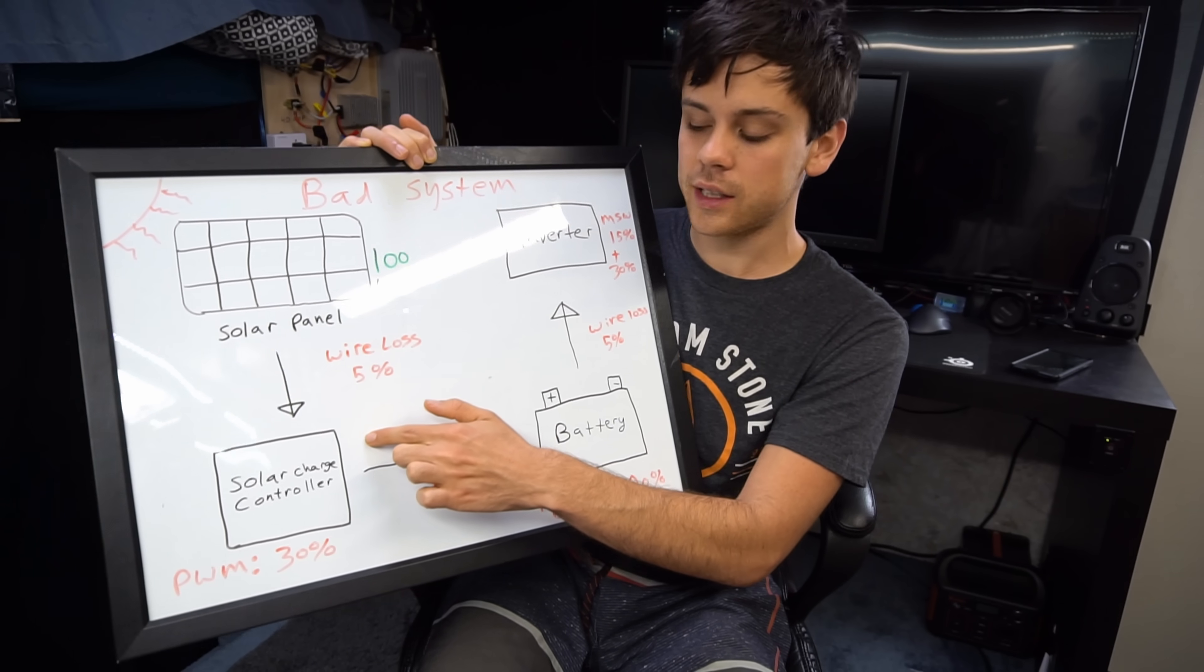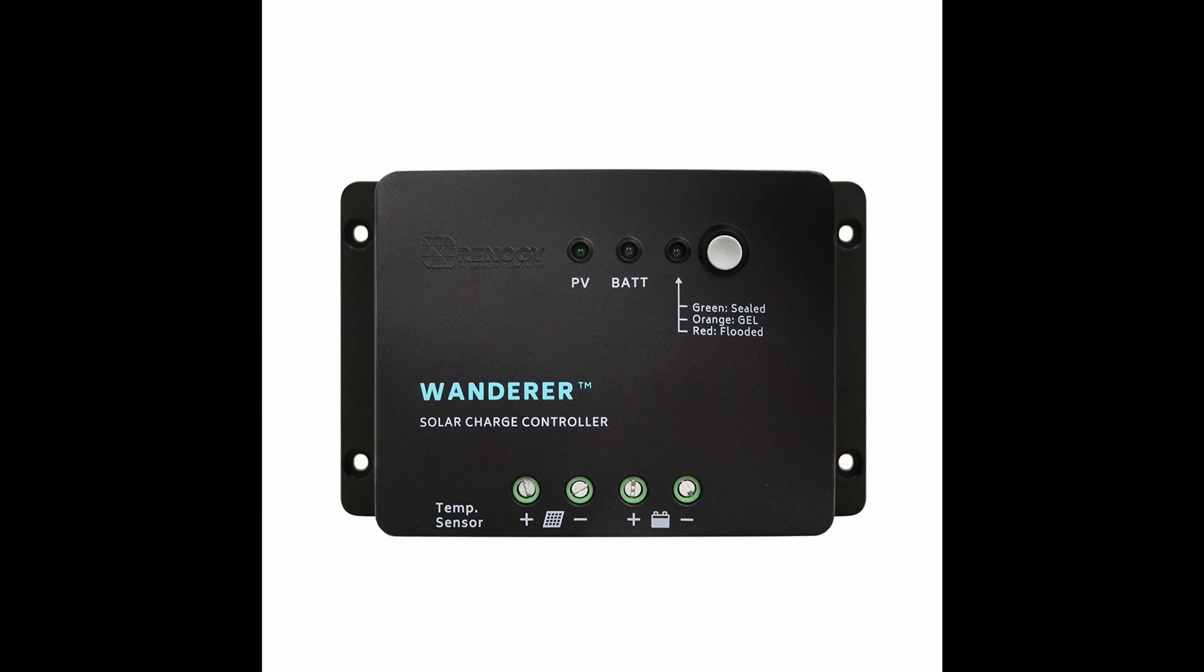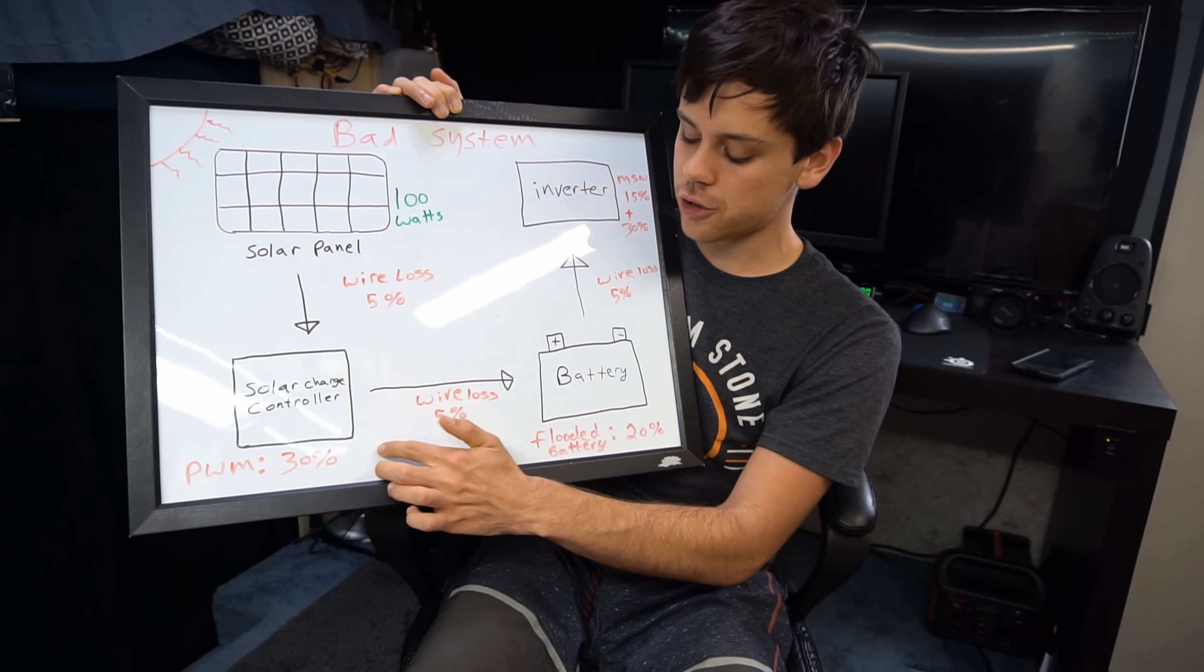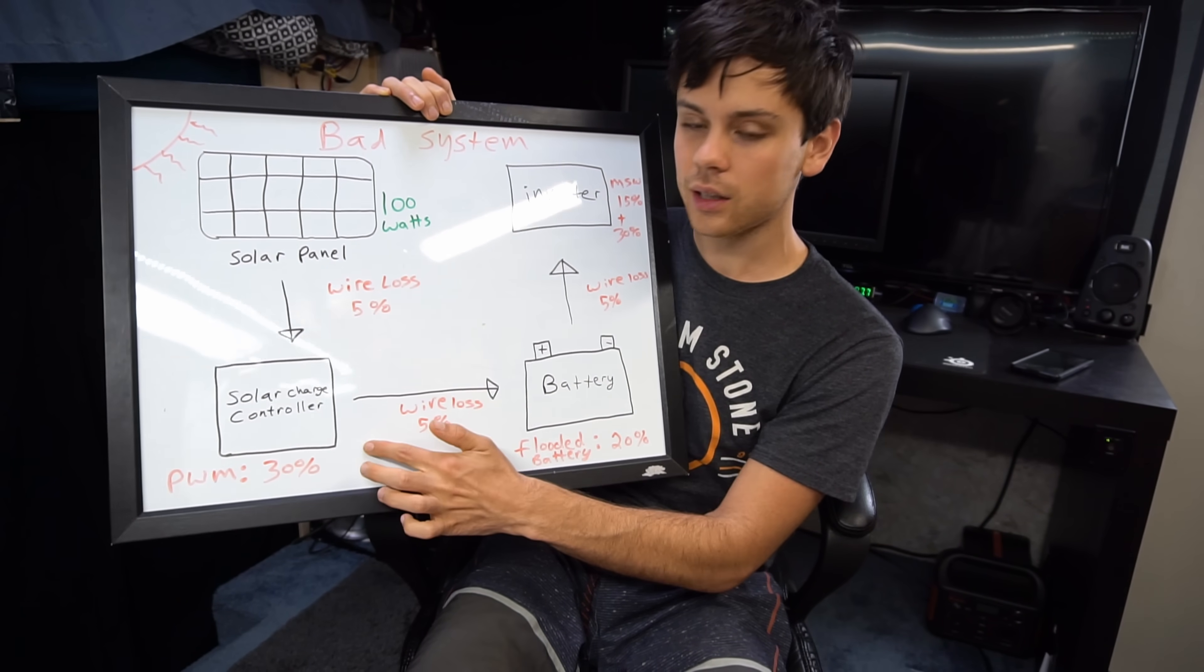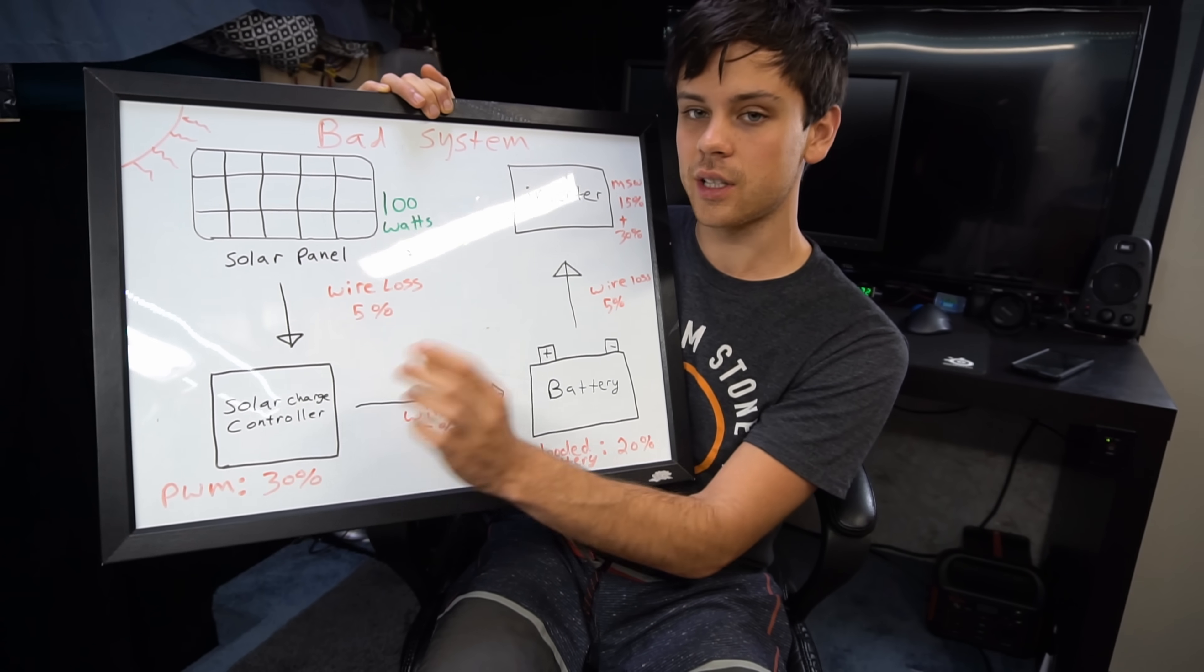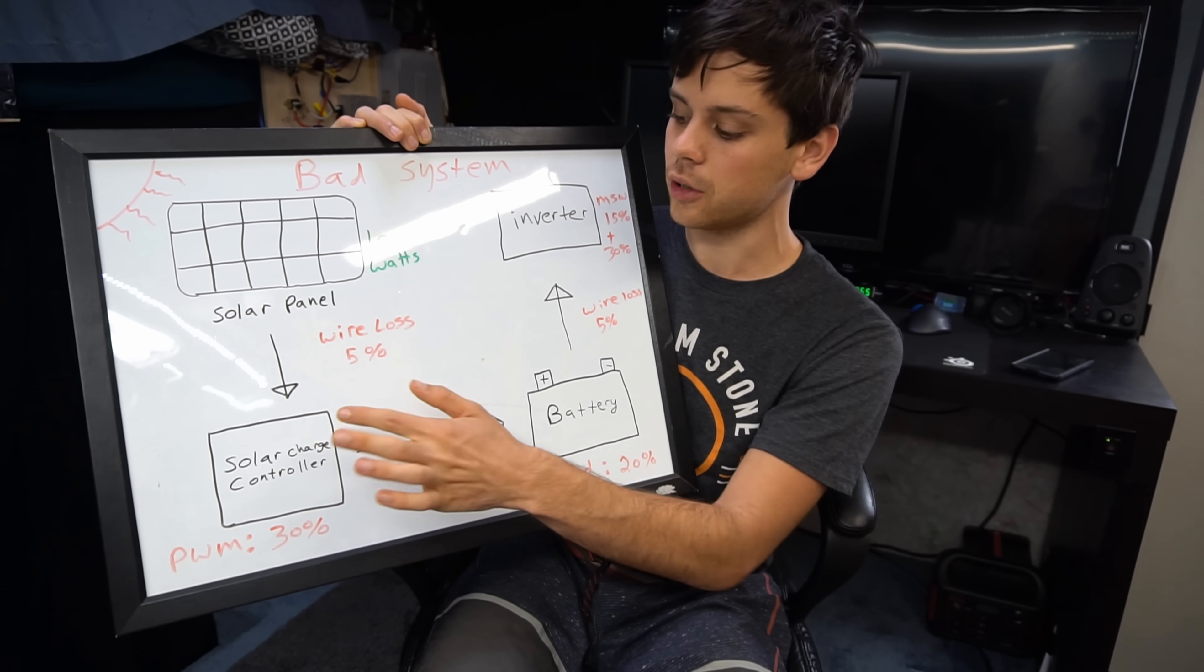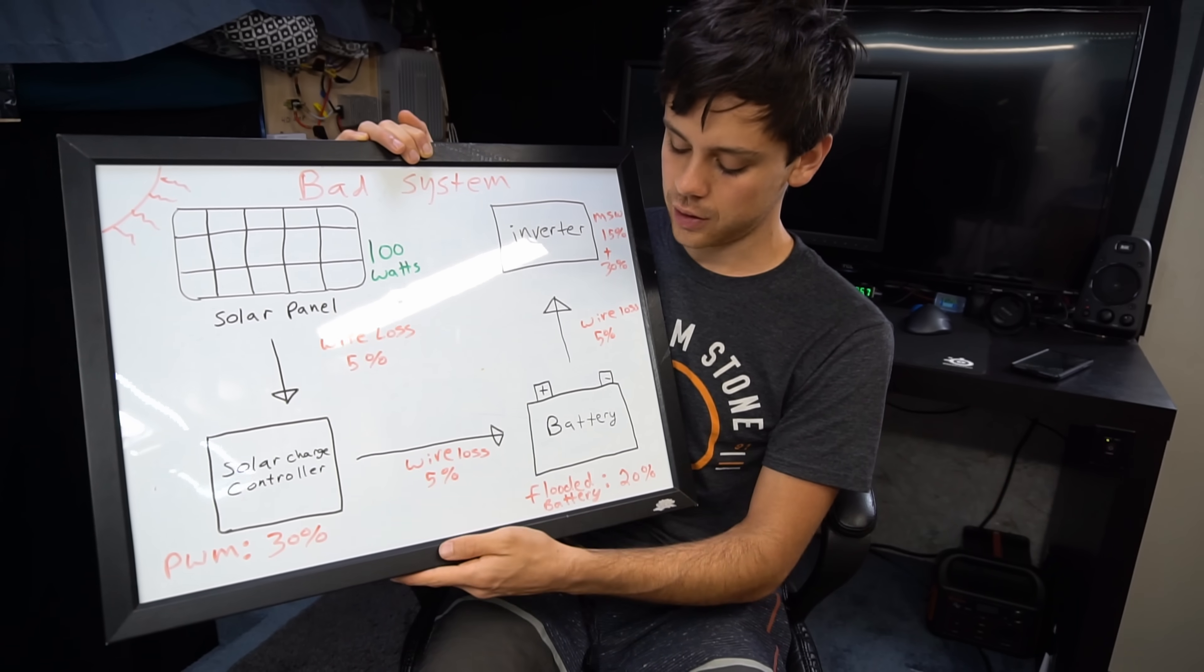Then the solar charge controller, let's use the cheapest one possible, a pulse width modulation controller, and we're going to have a 30 percent loss automatically. Next going from the solar charge controller to the battery we're going to have another 5 percent loss because people do not like to size these accordingly and if the input terminal on the solar charge controller is not large enough people use smaller wires. I've seen that all the time, they'll use the same size wires as the solar panel and that's not what you're supposed to do, it's a different voltage.